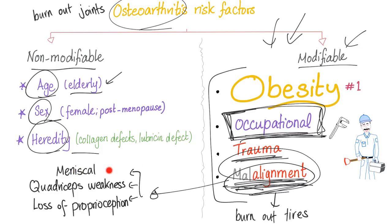Examples of malalignment include meniscal injury — because the menisci are critical for knee alignment — quadriceps weakness where one leg bears more weight than the other, and loss of proprioception where you can't feel the joint properly, causing the other joint to bear excess load and develop osteoarthritis.